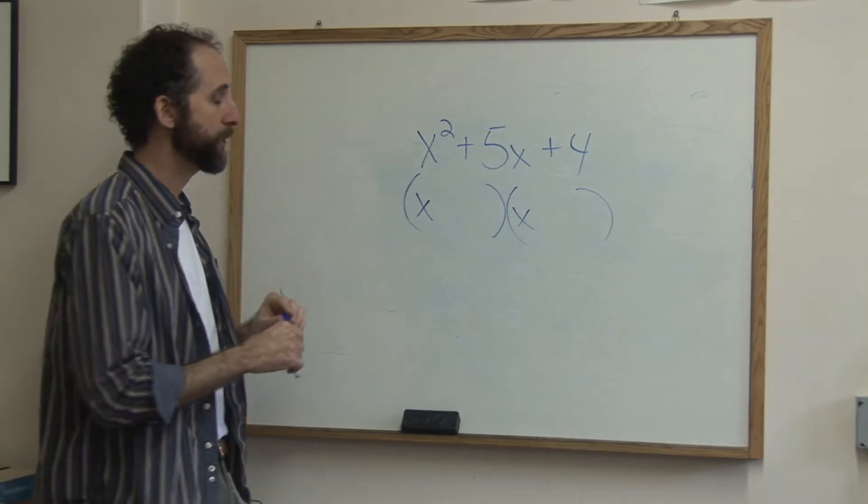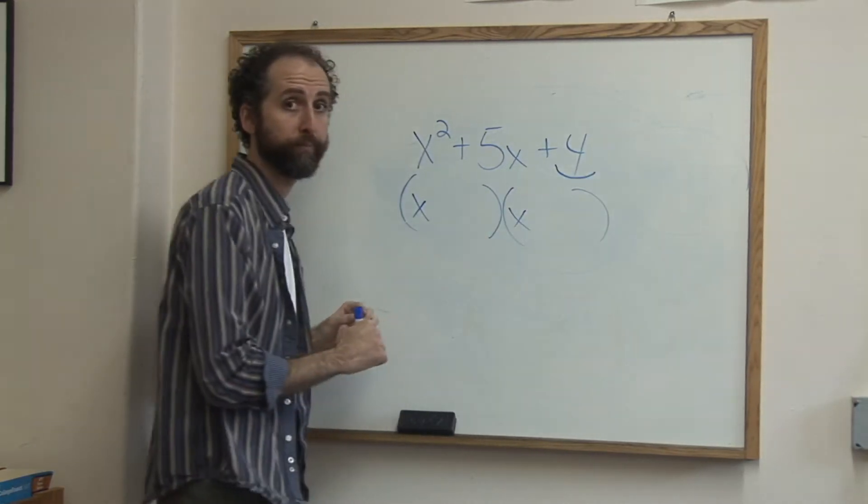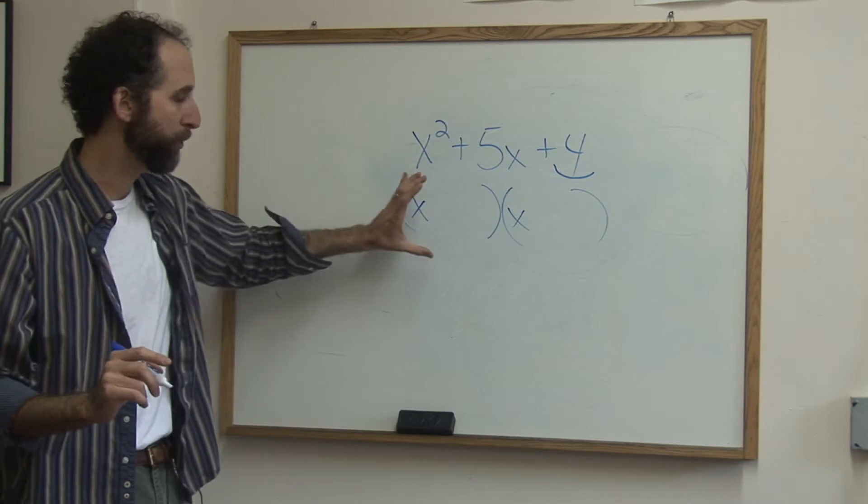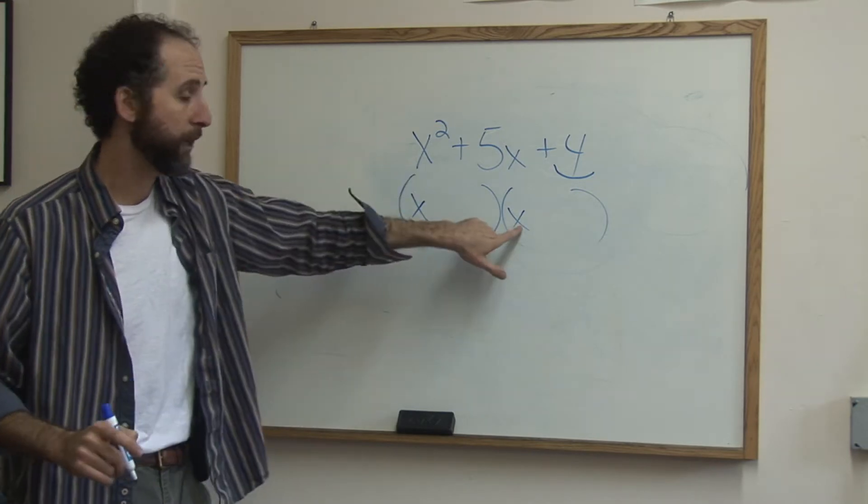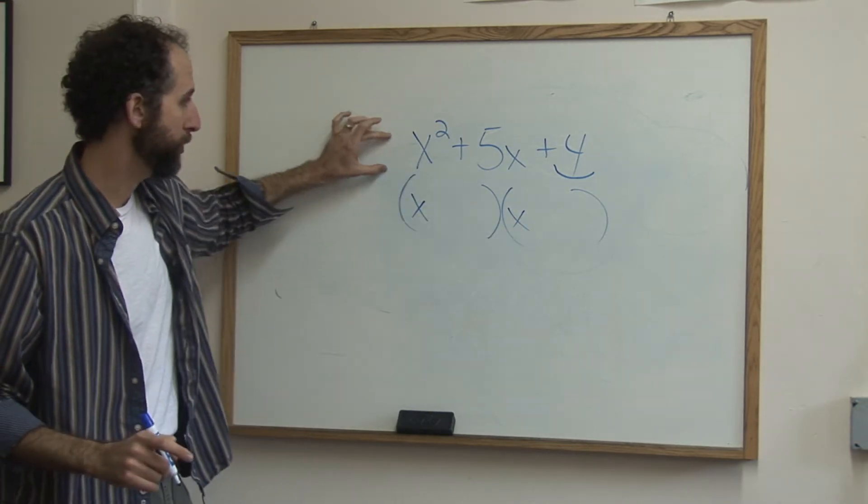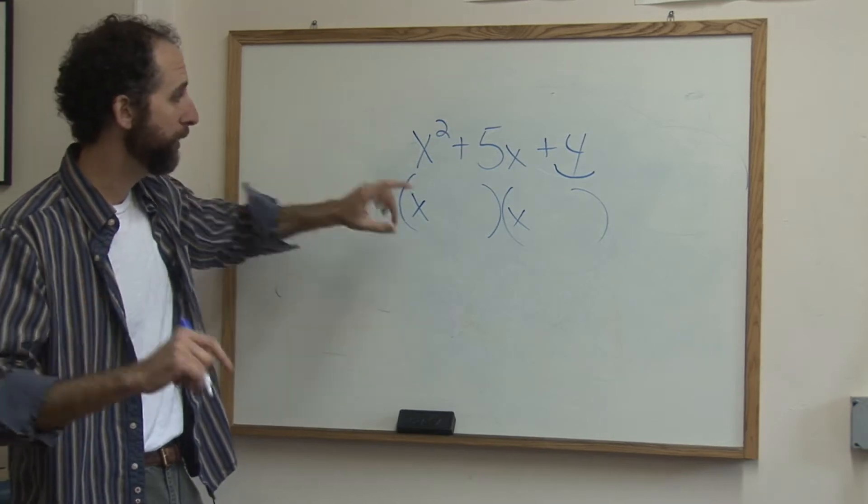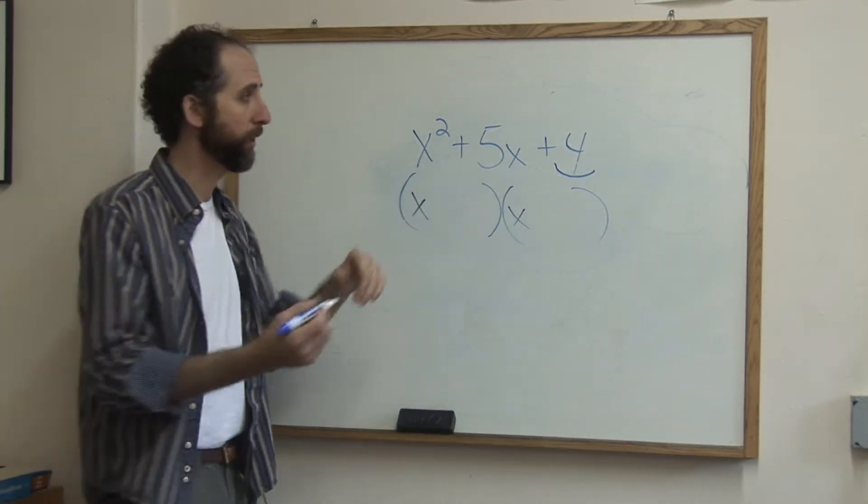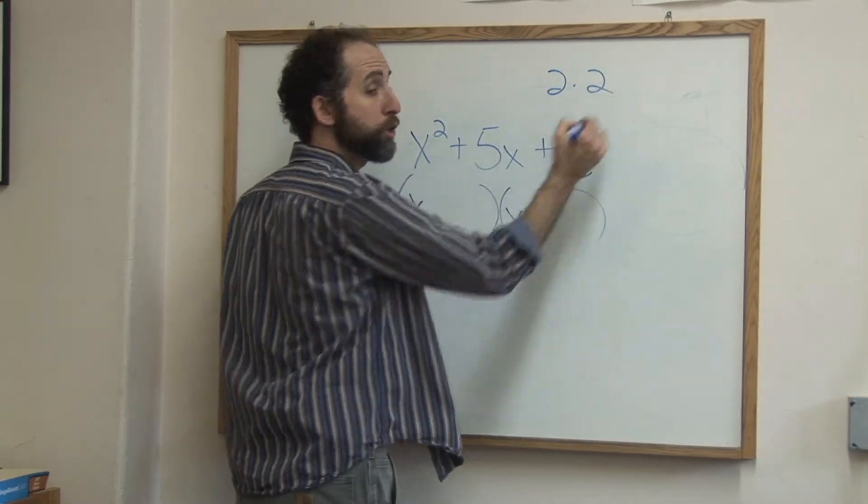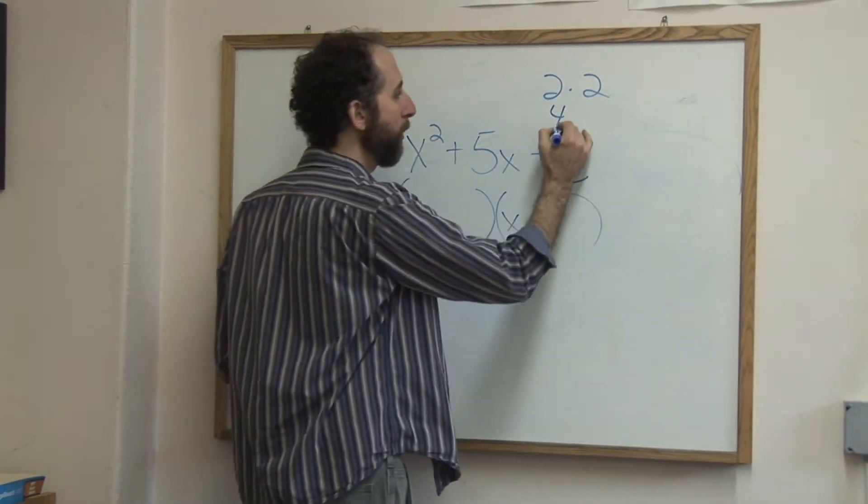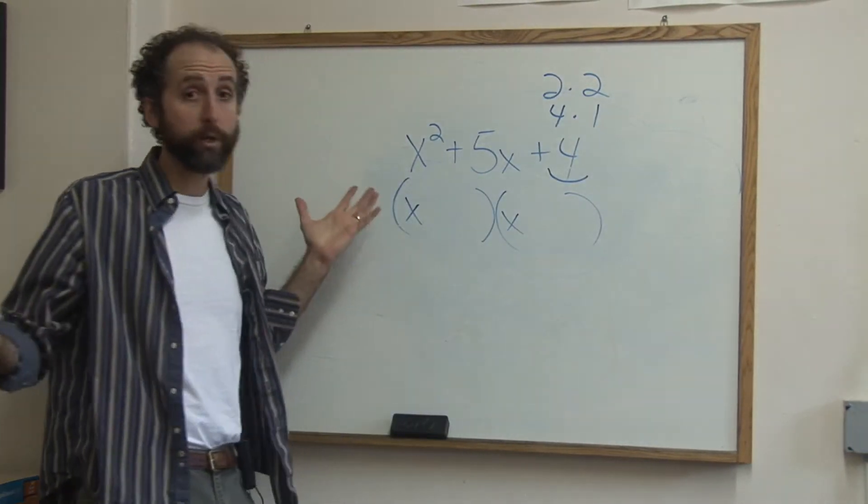Now you need to ask yourself what numbers multiply to give me this 4. That's the next step. Step one, draw the parentheses. Step two, x and x, assuming that there's no number here. Step three, what numbers multiply to be 4? So here's the deal: 2 times 2 is 4, or 4 times 1 is 4. Those are the only options.